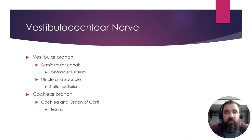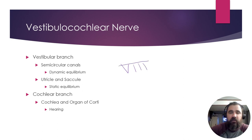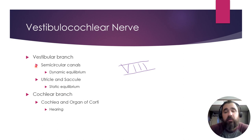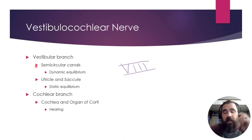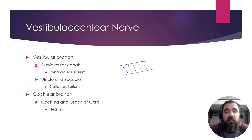The vestibulocochlear nerve (CN VIII) has two branches. The vestibular branch includes the semicircular canals for dynamic equilibrium — when you spin, endolymph bends hair cells — and the utricle and saccule for static equilibrium, using otoliths on a gel membrane. If an otolith gets dislodged into a semicircular canal, it causes benign paroxysmal positional vertigo (BPPV), making the brain think the head is moving when it's not, producing dizziness or a spinning sensation.